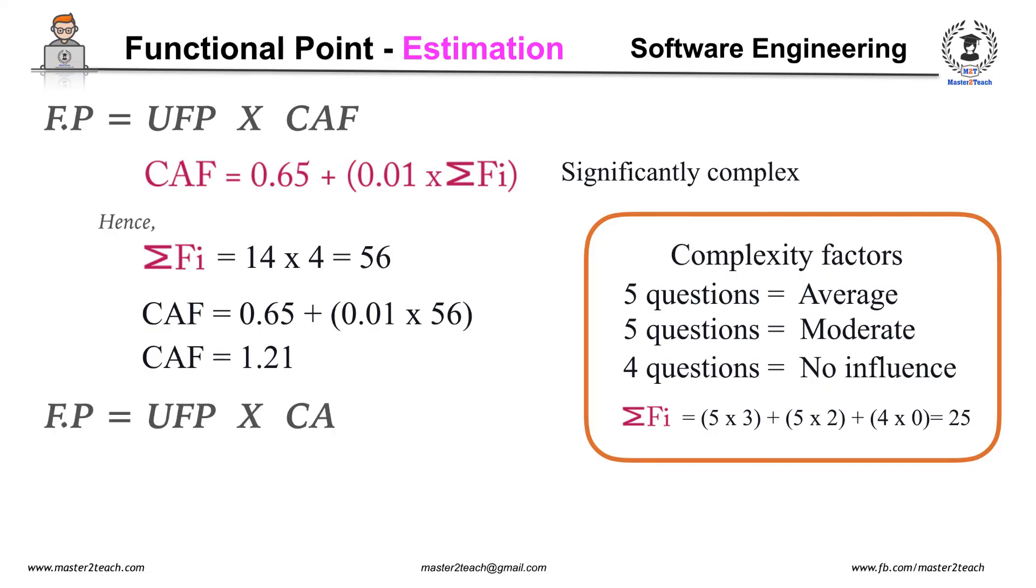Therefore final Functional Point equals UFP times CAF. Functional Point equals 985 times 1.21, which equals 1191.85. In this way we can calculate the Unadjusted Functional Point, Complexity Factor, and finally Functional Point, from which we can estimate the lines of code required to develop the software, the number of priority errors, the effort required, development time, etc., using previous data.